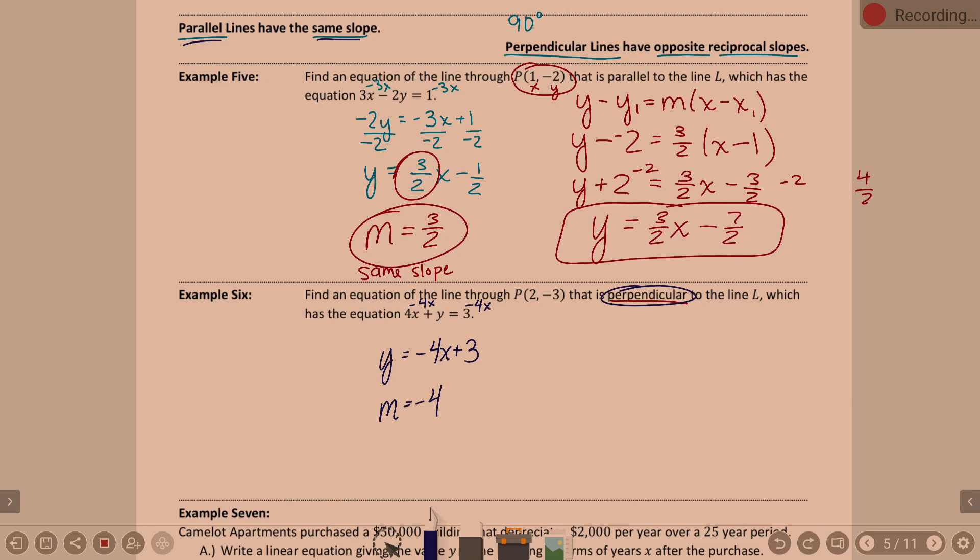Now, if that slope is negative 4, we need to then know what is the perpendicular slope. Perpendicular slope is the – what? Opposite reciprocal. Opposite reciprocal.